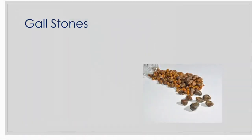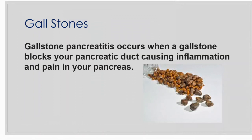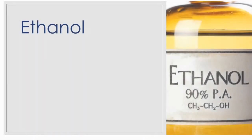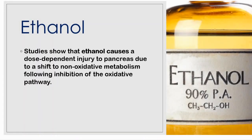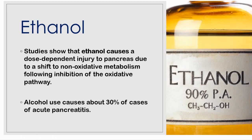Gallstones are the main cause of acute pancreatitis. Gallstone pancreatitis occurs when a gallstone blocks your pancreatic duct, causing inflammation and pain. Ethanol or alcohol causes a dose-dependent injury to the pancreas due to a shift to non-oxidative metabolism following inhibition of the oxidative pathway, and alcohol use accounts for about 30% of all cases of acute pancreatitis.